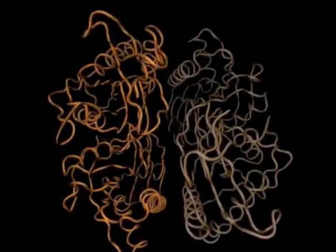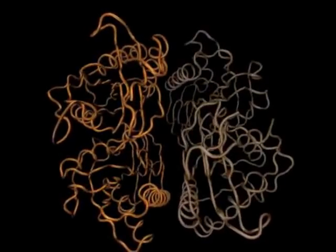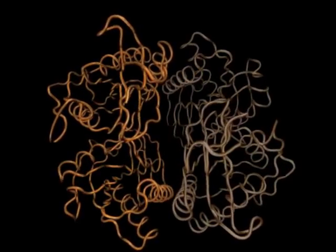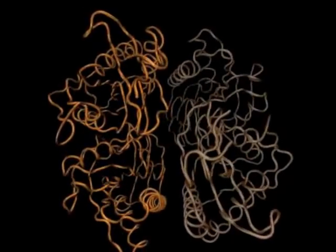And basically in the thermophile, this conformation is stabilized so you get the tetramer forming. In the mesophile, this conformation is stabilized, so the tetramer doesn't form.